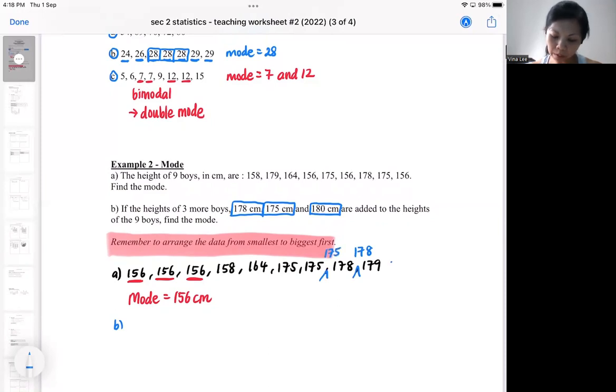After we insert these three boys, do we encounter some changes? We do encounter some changes. Because 175 appears three times, same as 156.